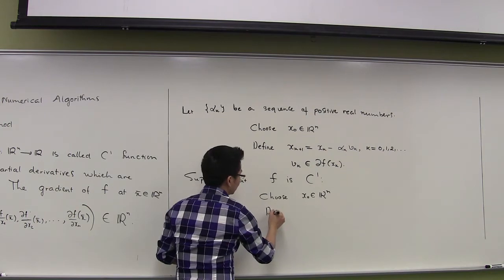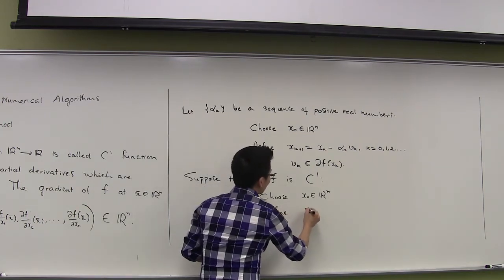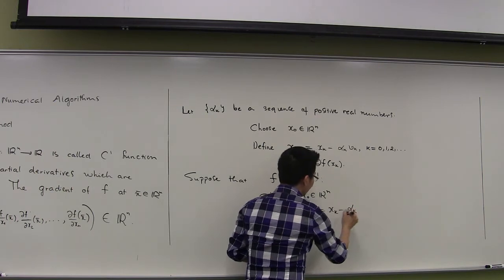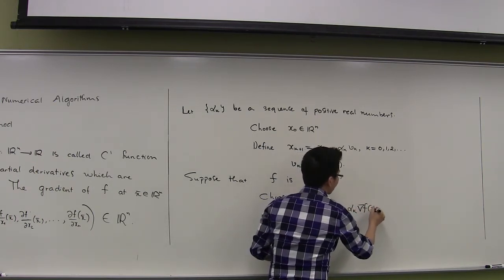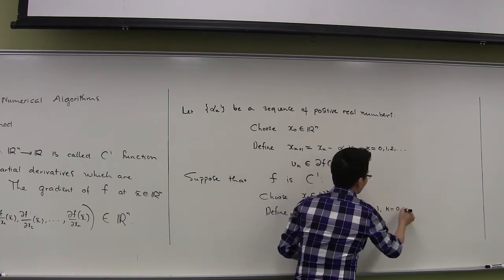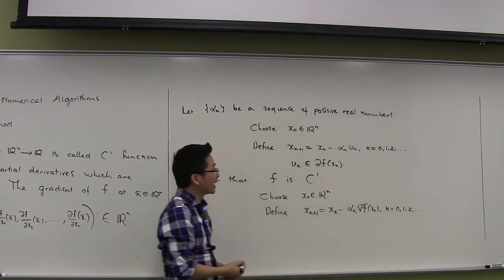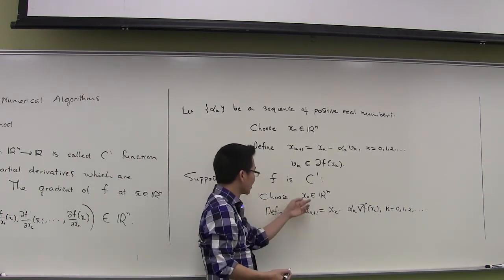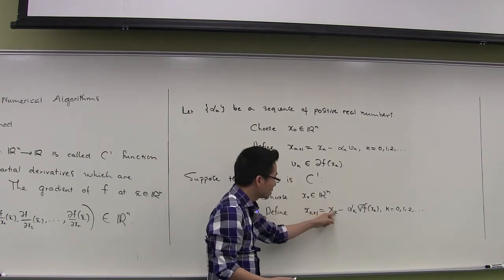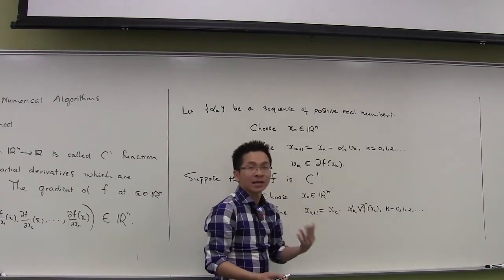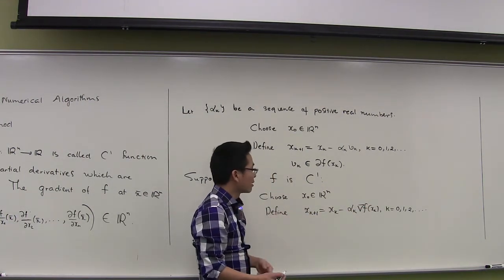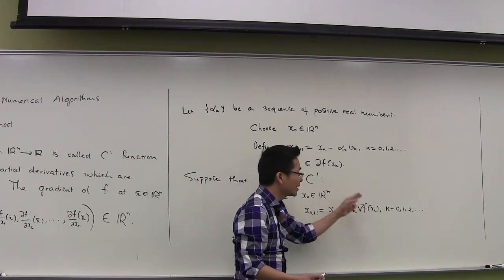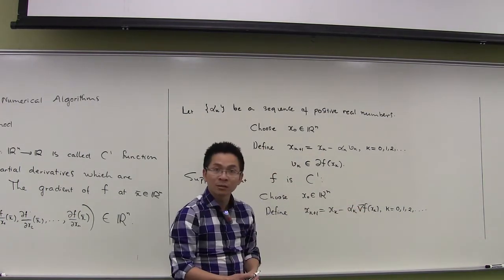We define x_{k+1} by this formula: x_{k+1} = x_k minus alpha_k times the gradient of f at x_k, where k runs from 0, 1, 2, and so on. This is a very simple algorithm. After we choose x_0, x_1 is given by x_0 minus alpha_0 times the gradient of f at x_0. After we know x_1, x_2 = x_1 minus alpha_1 times the gradient of f at x_1, and so on.